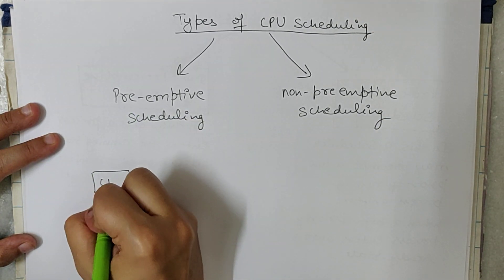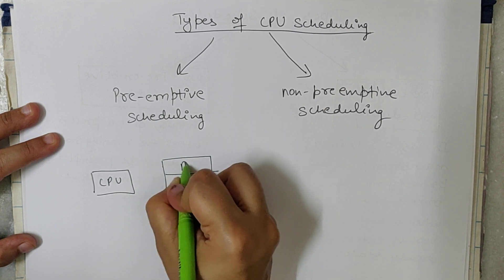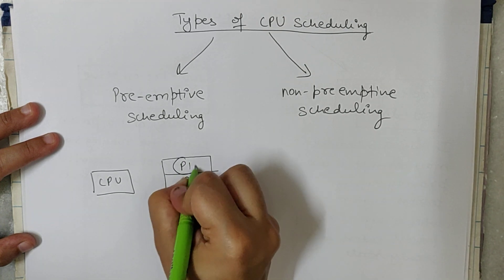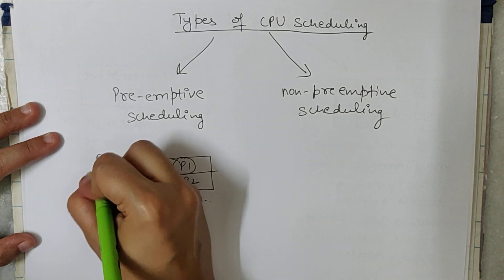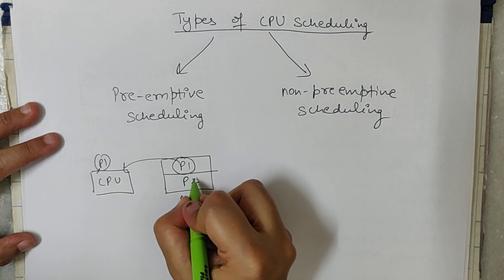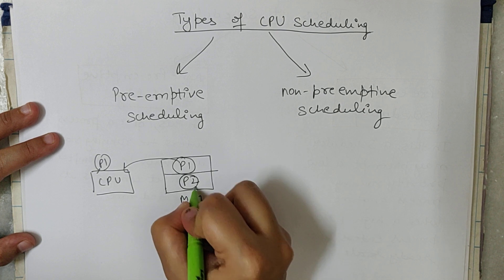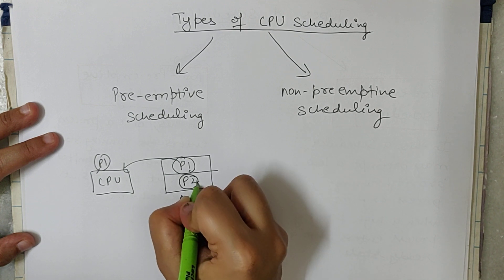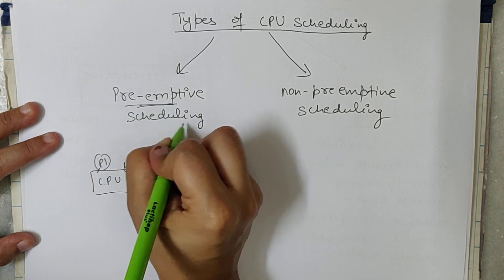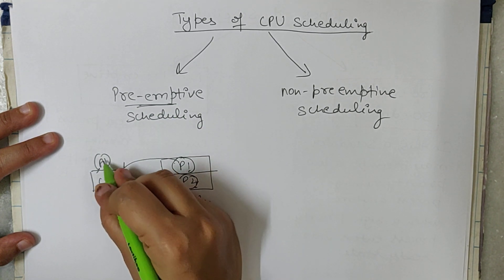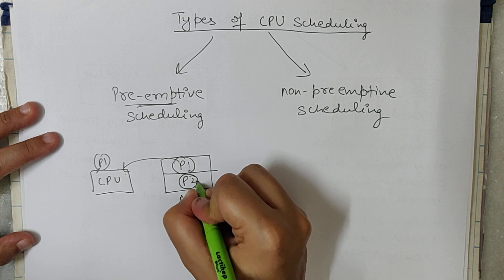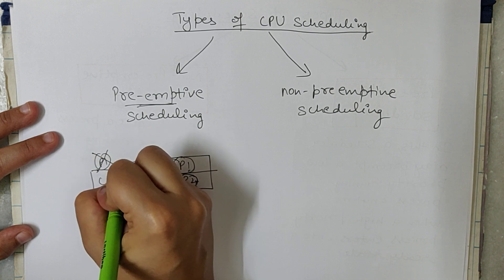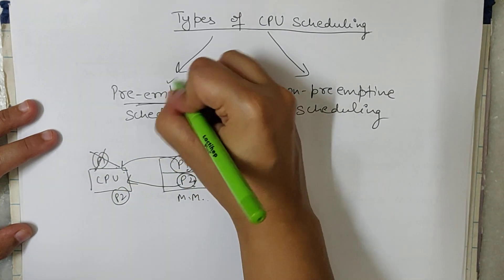Preemptive scheduling means: suppose this is the CPU and the main memory has two processes. P1 is currently using the CPU. Now if P2 arrives with a higher priority compared to P1, in preemptive scheduling, P2 can interrupt P1 — it can remove P1 from the CPU and get the CPU itself. This is preemptive scheduling.